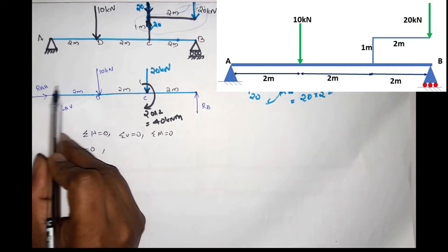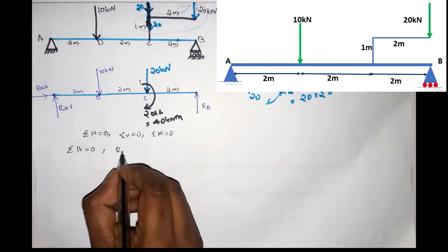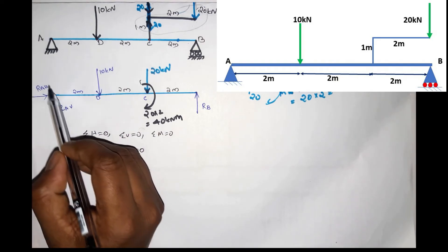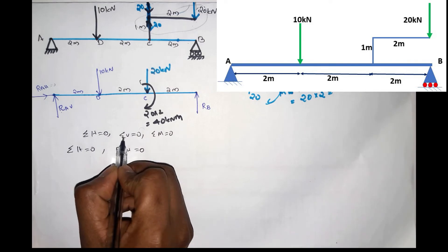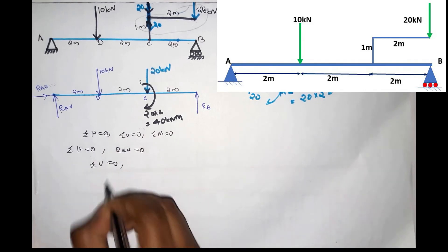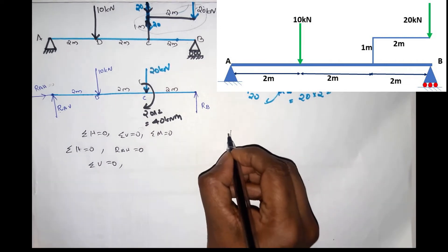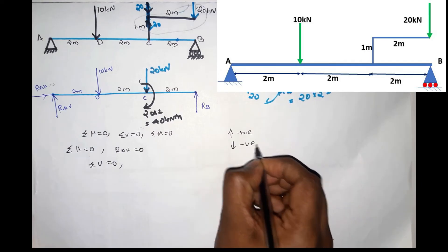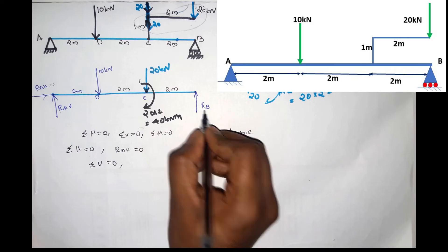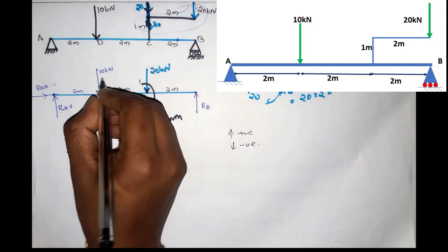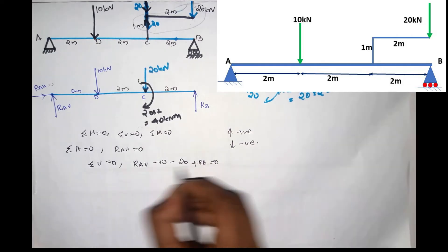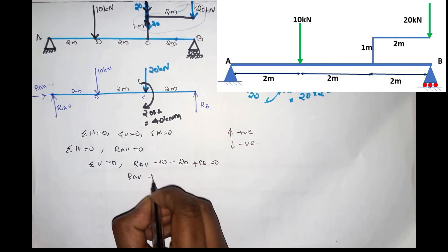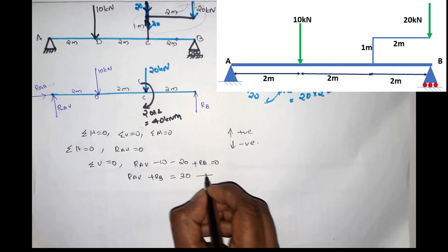Sigma H = 0: we have a horizontal force Rah equal to 0 — this is the equilibrium equation. The horizontal reaction component is equal to 0. For Sigma V = 0, upward forces are positive. Rav and Rb are going up, so Rav minus 10 minus 20 plus Rb = 0, giving us Rav plus Rb = 30. This is equation number 1.